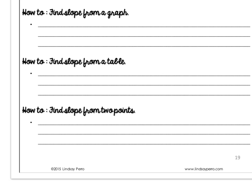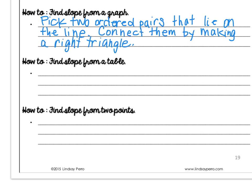To find the slope from a graph, you first want to pick two ordered pairs that lie on the line. Next, you'll connect the two points by making a right triangle. The hypotenuse is the line. The rise, or the vertical change, over the run, or the horizontal change, is your slope. We'll practice that on the next page.